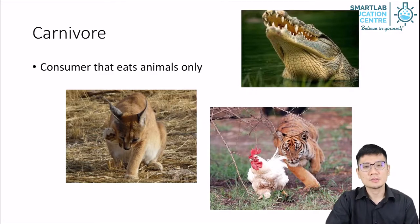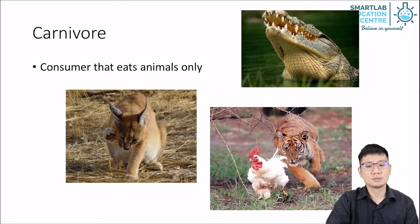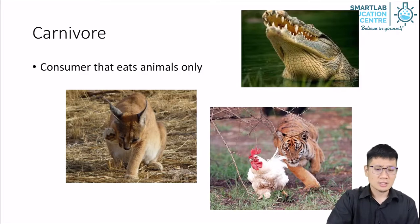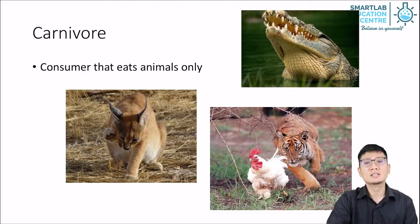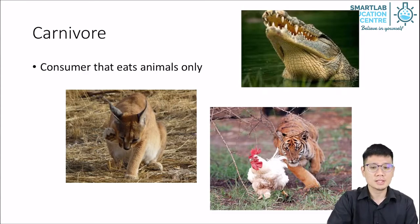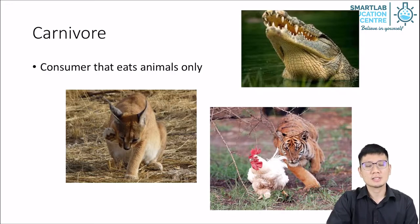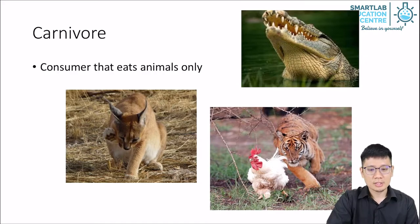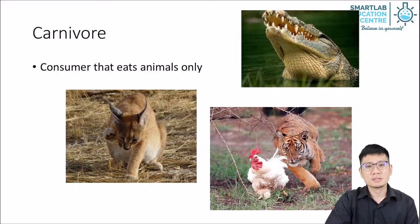Let's talk about carnivores. Carnivores are animals that eat animals only. But again, are there carnivores that can eat plants? Yes, there are some cases where a carnivore may consume small amounts of plant material, but they do not use it as a main food source. A carnivore is an animal whose main food source is meat — other animals.